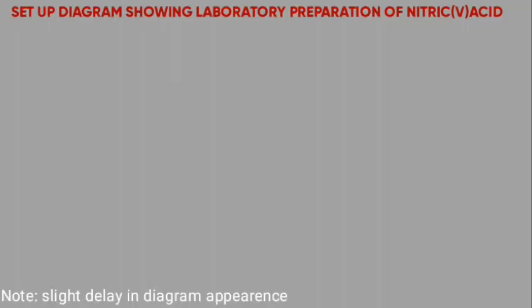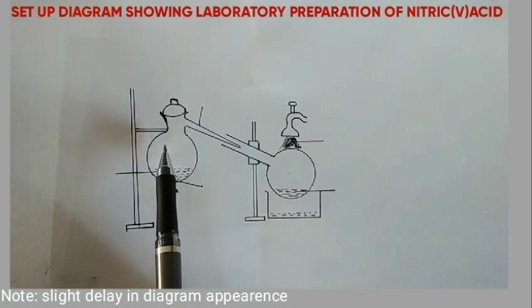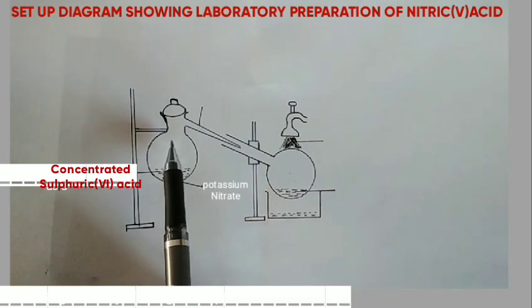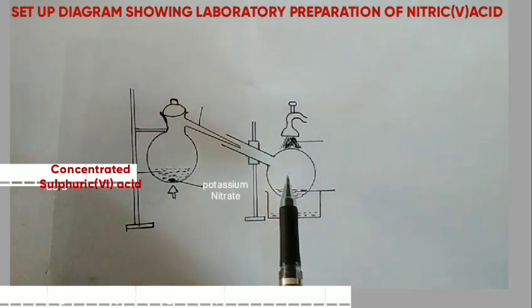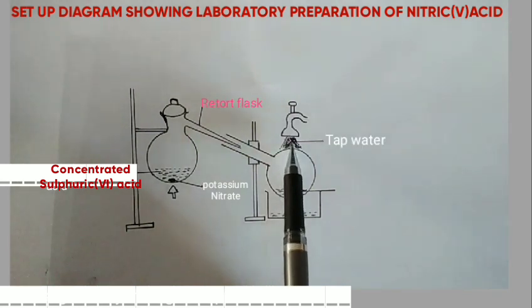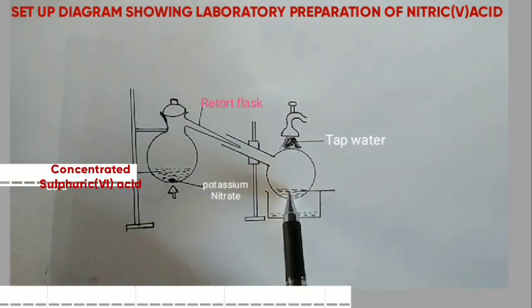The diagram shows the laboratory preparation of nitric acid. The mixture of potassium nitrate and concentrated sulfuric acid is gently heated in a retort flask. The nitric acid formed appears as brown fumes, and is collected on the other side, condensed by tap water, where it forms liquid nitric acid.